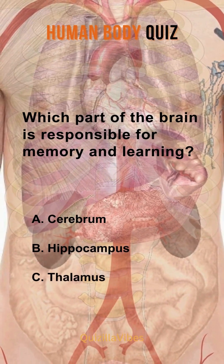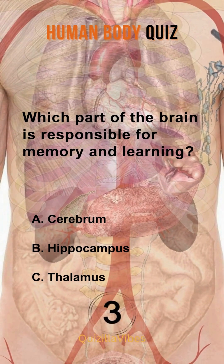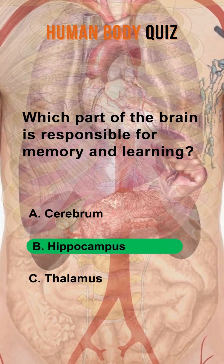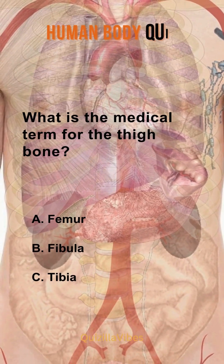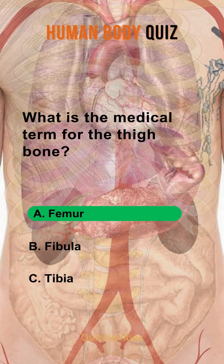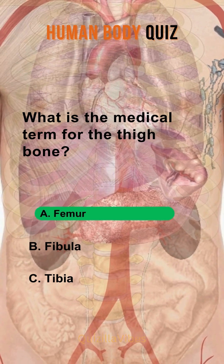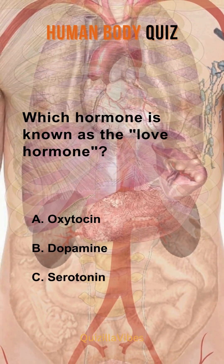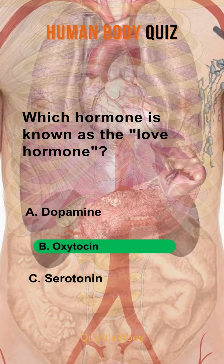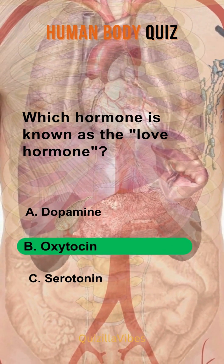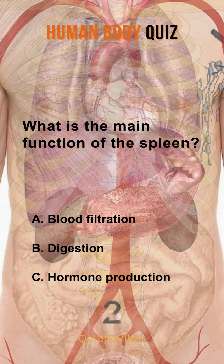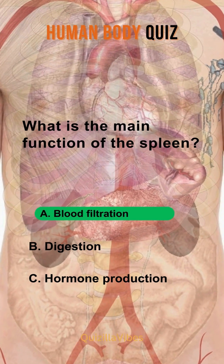Which part of the brain is responsible for memory and learning? Hippocampus. What is the medical term for the thigh bone? Femur. Which hormone is known as the love hormone? Oxytocin. What is the main function of the spleen? Blood filtration.